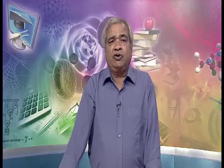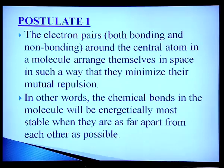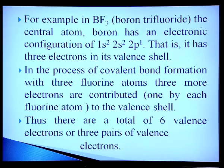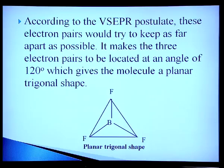Valence Shell Electron Pair Repulsion (VSEPR) theory has two main postulates. First: electron pairs — both bonding and non-bonding — around the central atom arrange themselves in space to minimize mutual repulsion; chemical bonds are most stable when as far apart as possible. For example, in BF₃ the central boron atom has the configuration 1s²2s²2p¹ with three valence electrons. After forming covalent bonds with three fluorine atoms, there are six valence electrons (three pairs). These pairs arrange at 120° giving BF₃ a planar trigonal shape.